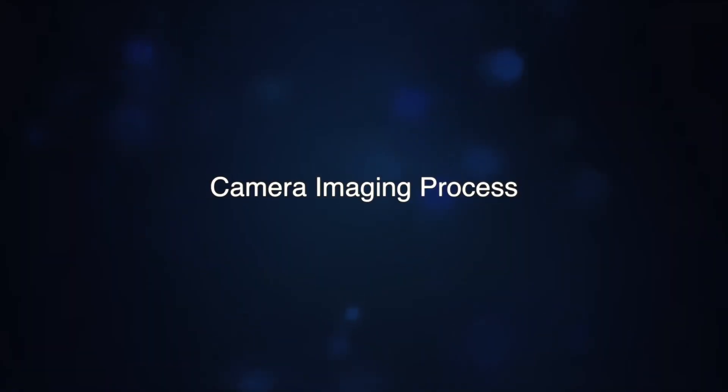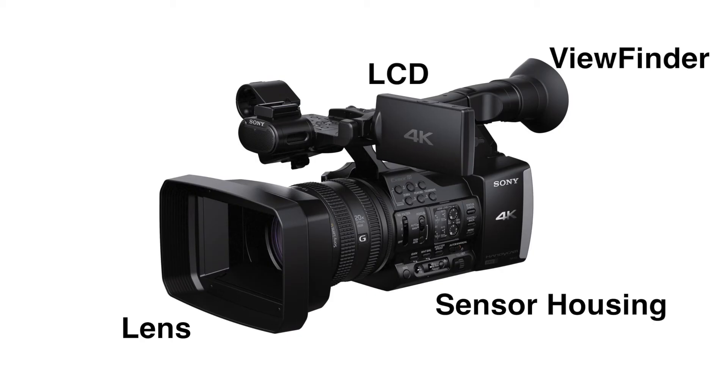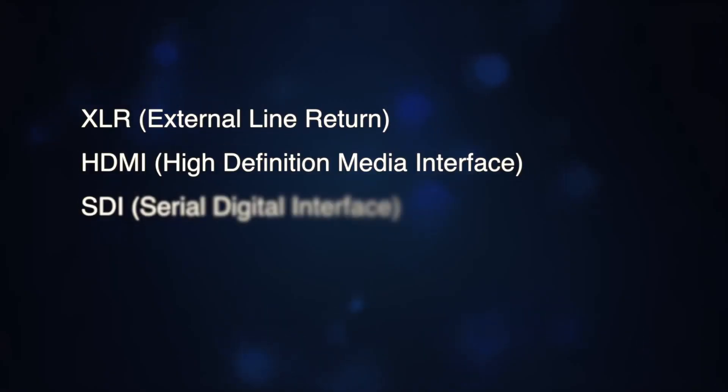Now let us move to the imaging process of video cameras. A video camera has three main parts: lens, imager, and recorder. The imager receives light coming through the lens and processes it into electrical signals. The recorder writes the converted electrical signal onto a recording medium like a flash memory card. The body houses the image sensor, LCD monitor, and viewfinder. There are also various external connections like XLR, HDMI (high definition media interface), SDI (serial digital interface), timecode out, and audio output options.